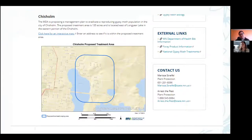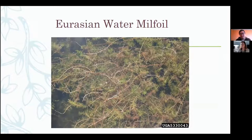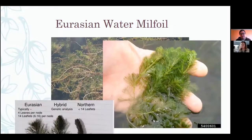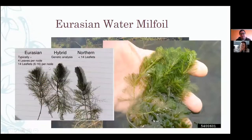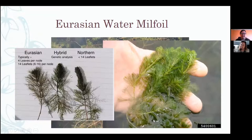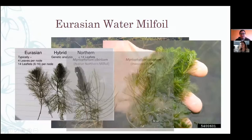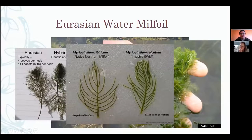Eurasian water milfoil — that's an aquatic plant. It makes these dense mats that affect fish breeding grounds and water quality. There is a native one, the northern milfoil, that has found its balance in our local ecosystem, whereas the Eurasian water milfoil is just taking over — it has nothing to keep it in check. They are also hybridizing with the native milfoil, so that's a problem. It's hard to identify, but the leaflets are slightly different.